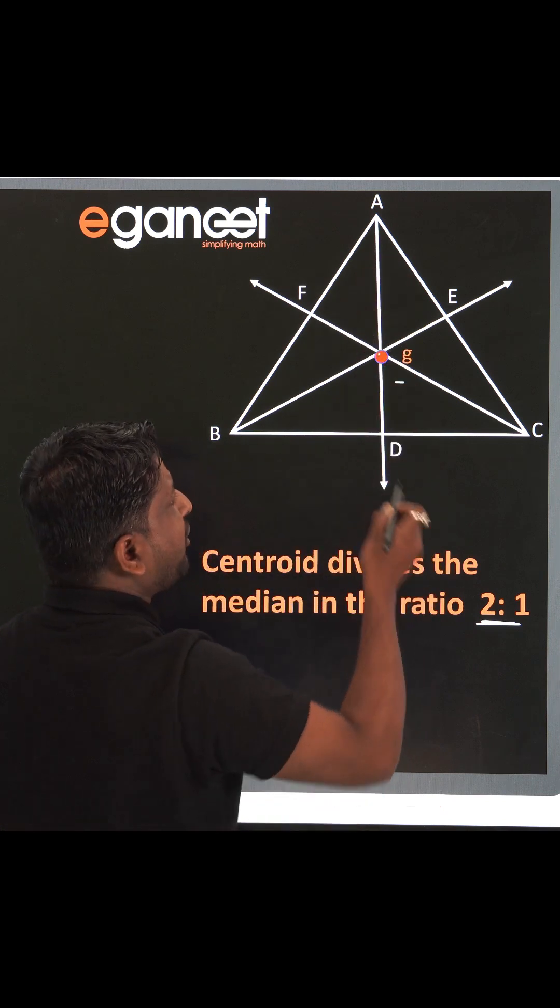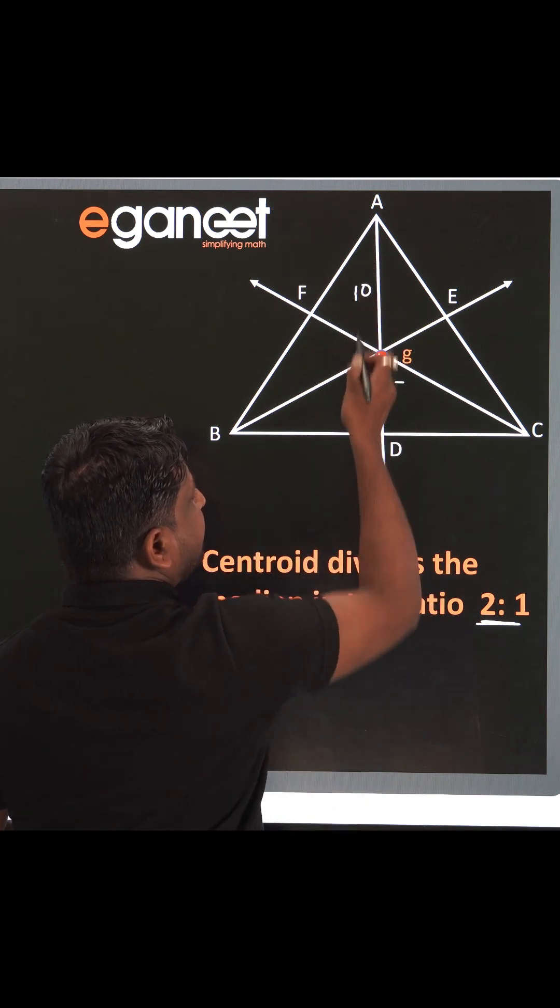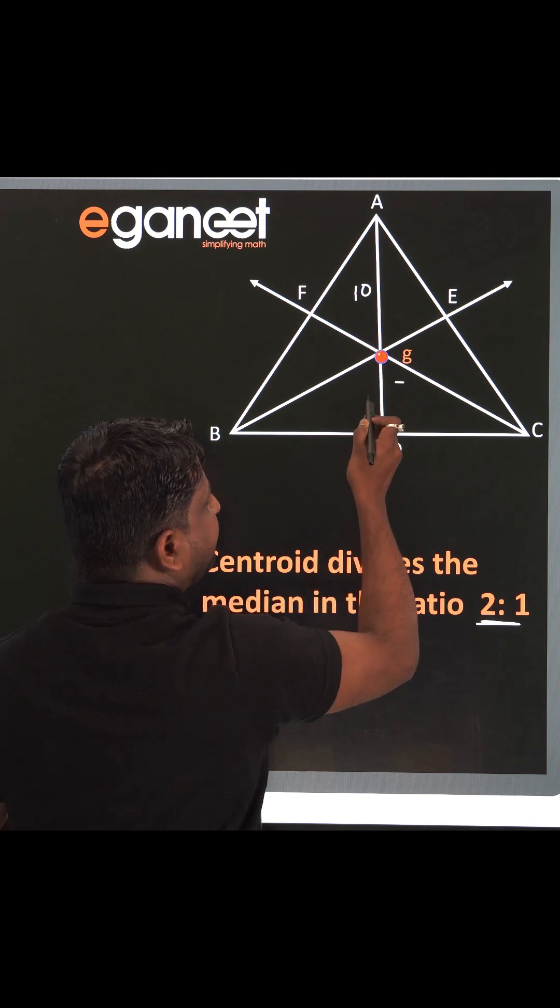AG upon GD will be 2 upon 1. If this is 10, then GD will be half of 10 which is 5.